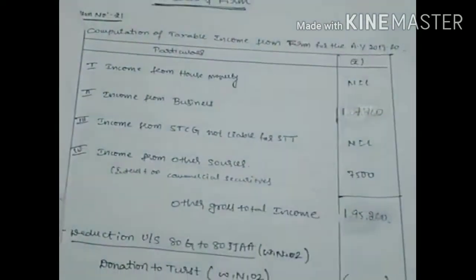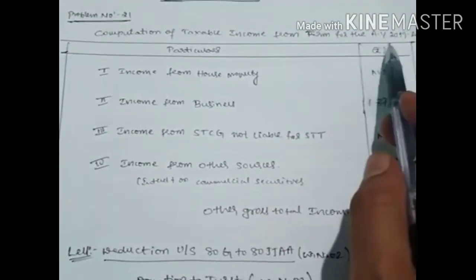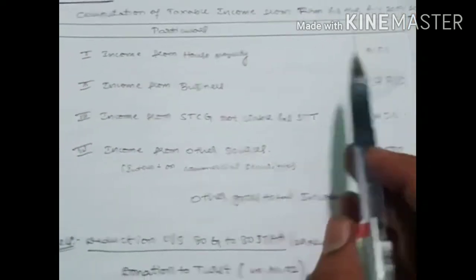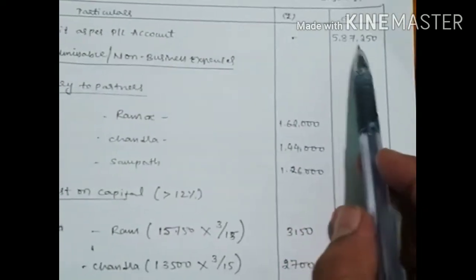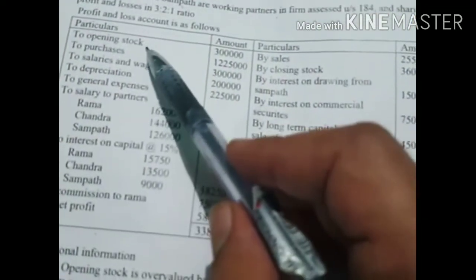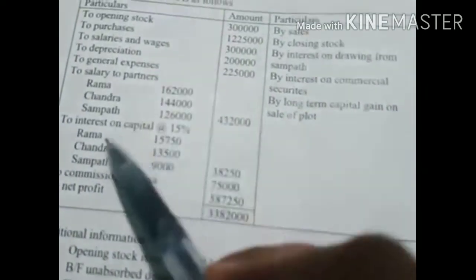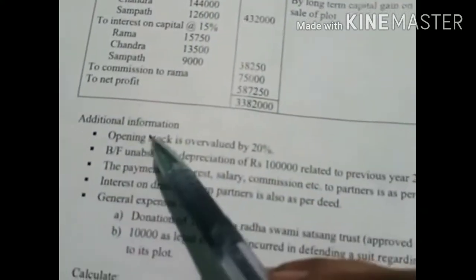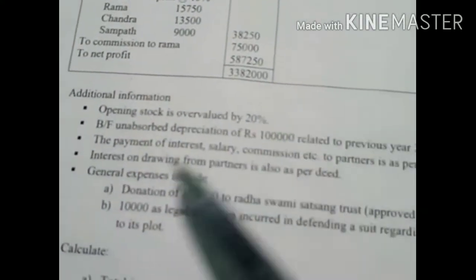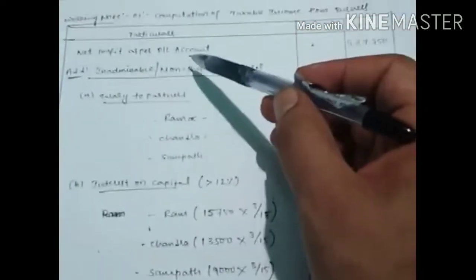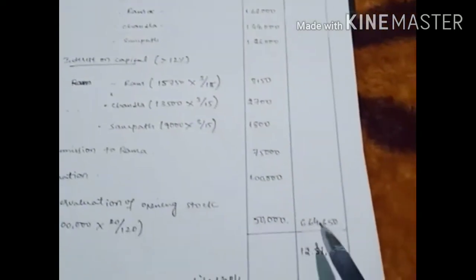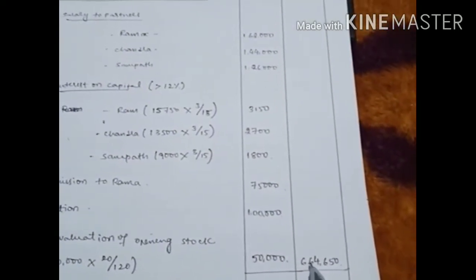Now let's see the solution. First, computation of taxable income from business for assessment year 2018-19. Income from house property — nothing provided, so nil. Income from business: we calculate Working Note 1 — computation of taxable income from business. Net profit as per profit and loss account is 5 lakh 87 thousand 250. Add inadvisable expenses: salary to partners, interest on capital in excess of 12 percent, commission, overvaluation of opening stock, and donation.